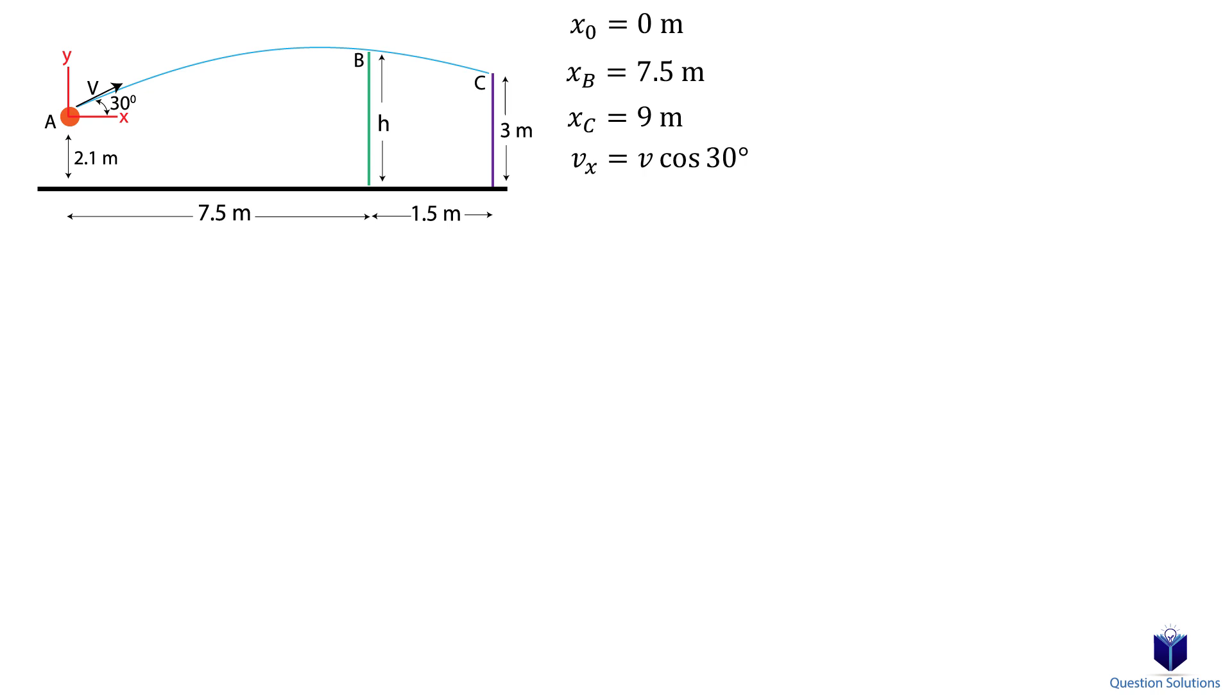For the vertical direction, the starting location is at 0 meters. At the location of the hoop, we have a height of 0.9 meters. Remember the coordinate system we picked is at the location of the ball when it's initially thrown.